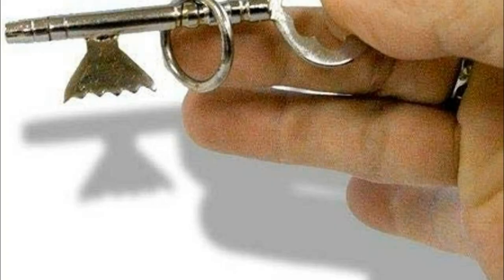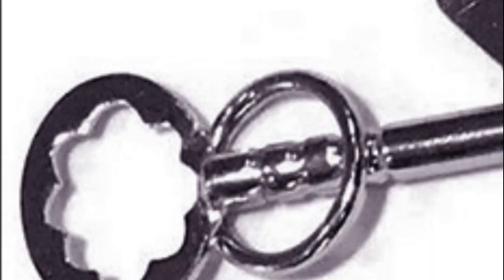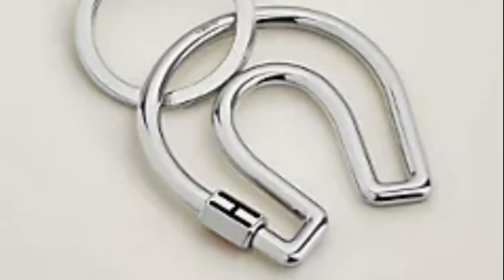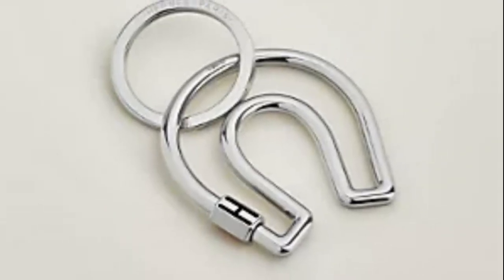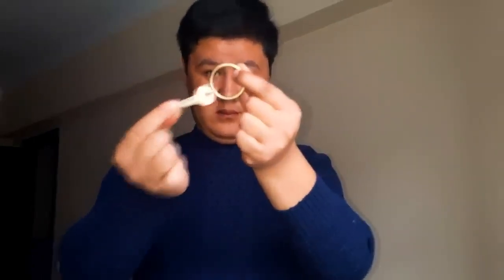The key into ring magic trick is a visually stunning illusion where a magician seemingly passes a key through the solid metal ring. The effect creates the illusion that the key magically appears inside the ring without any visible manipulation. The magician starts by displaying a key and a ring to the audience. Both objects are shown to be separate and ordinary. The magician holds the key and the ring in one hand, making sure that the audience can clearly see both items. This is done to establish that there is no trickery or hidden gimmicks involved.